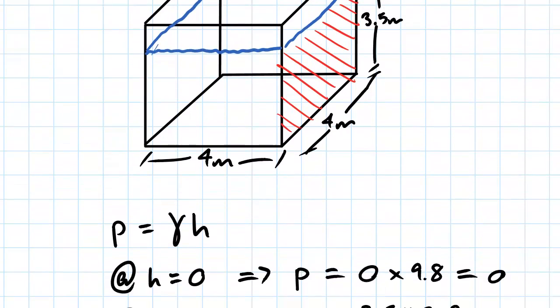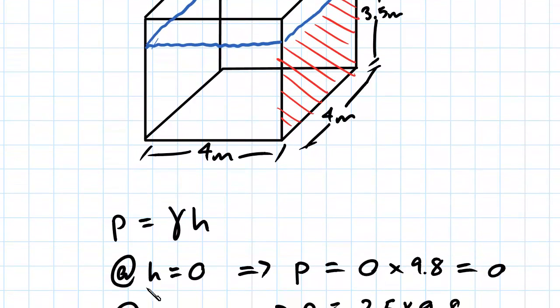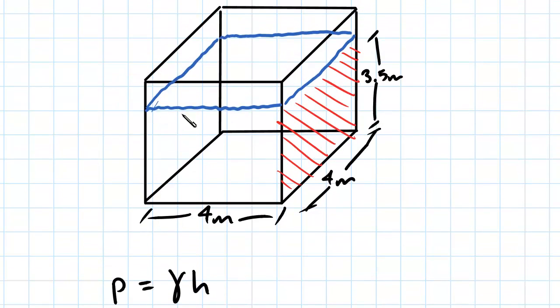So for this question, I'm going to have a look at h equals 0 first. And h equals 0 is the water level. So that's what we're going to call h equals 0, the water level.